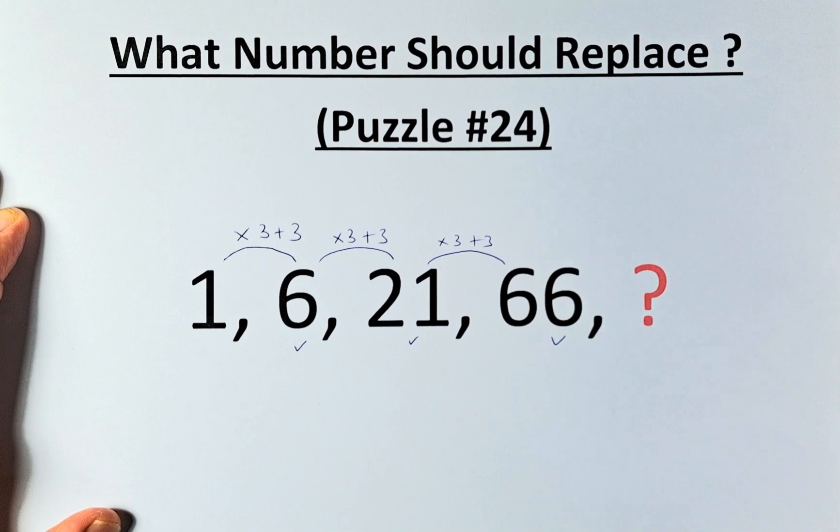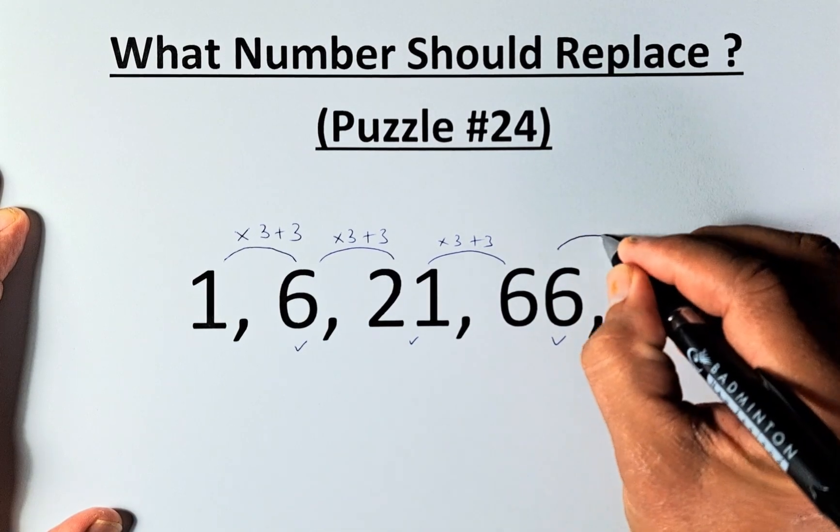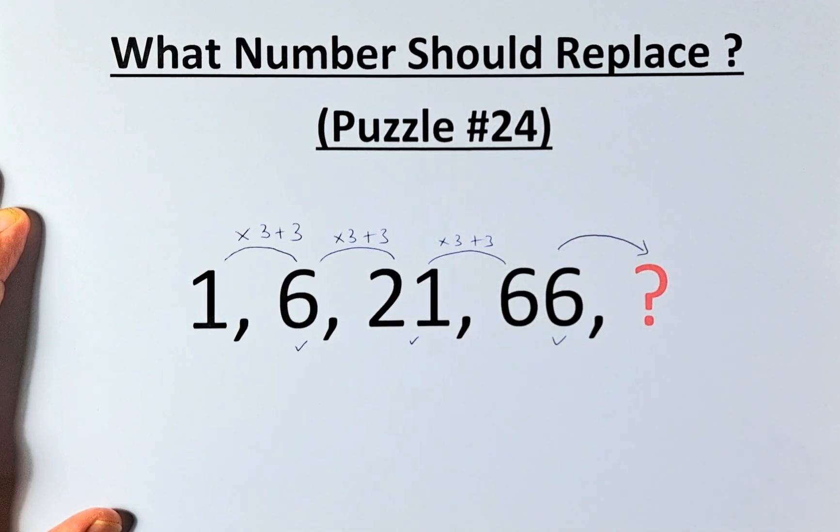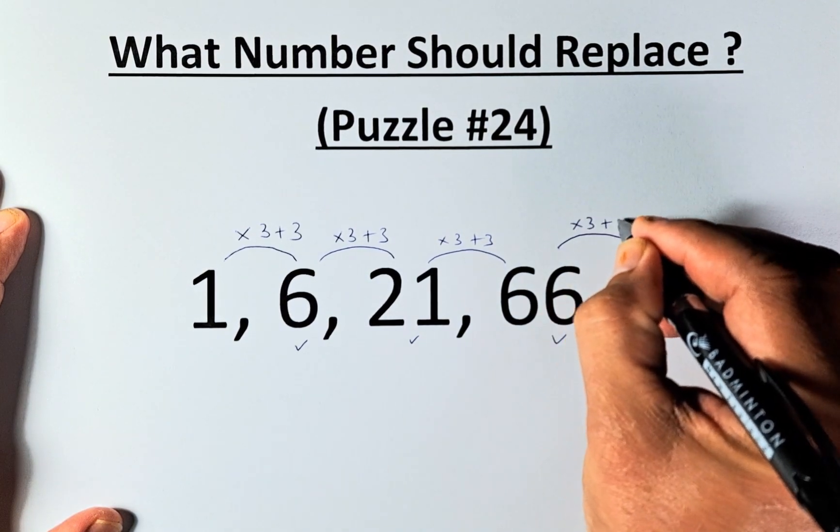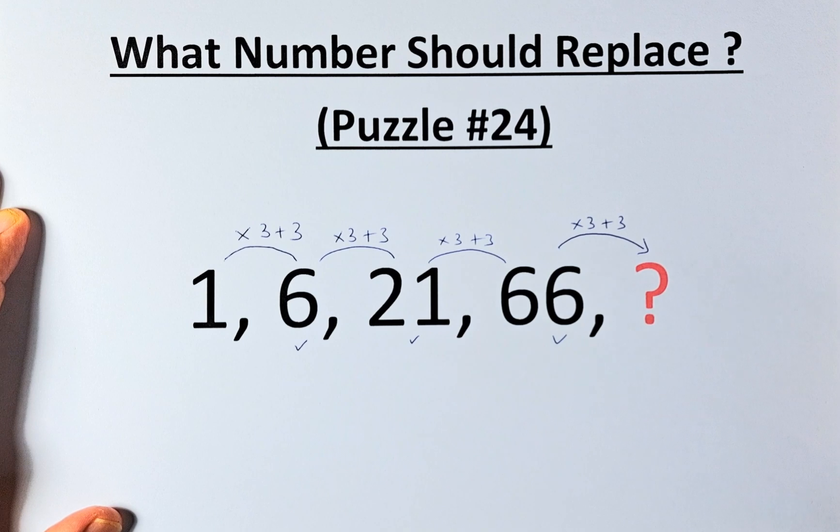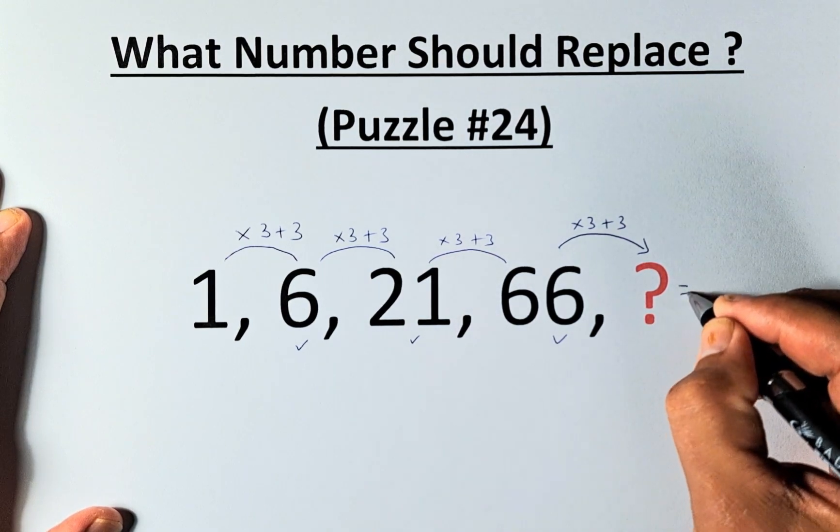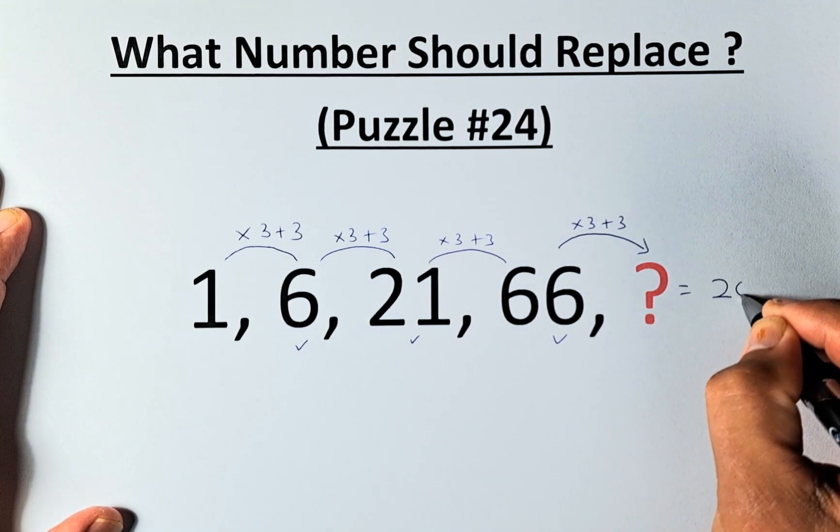Now, we go from 66 to the question mark. What is the value of the question mark? We do the same thing. Multiply by 3 and add 3. 66 times 3 is 198, 198 plus 3, and the question mark is 201.